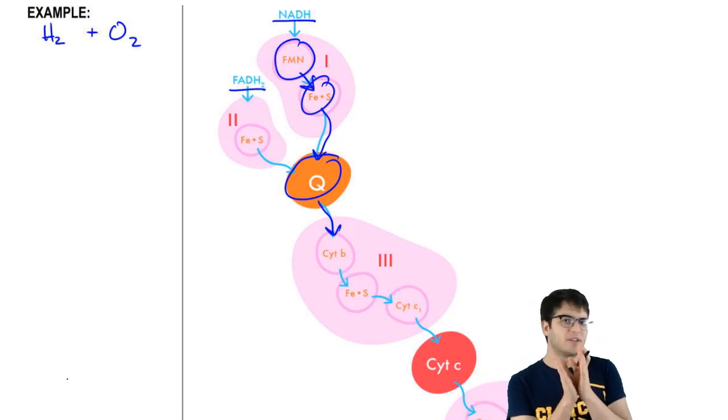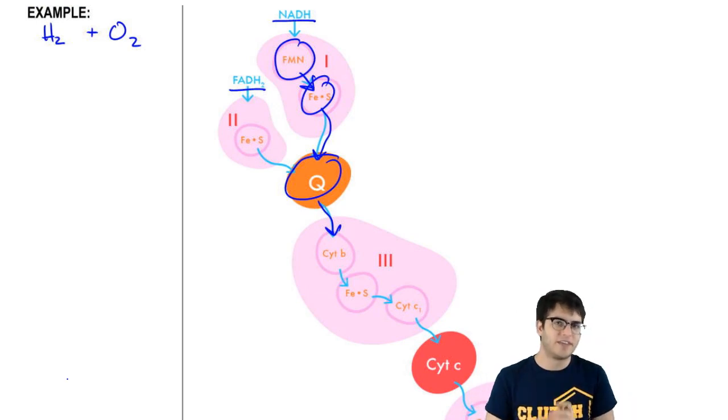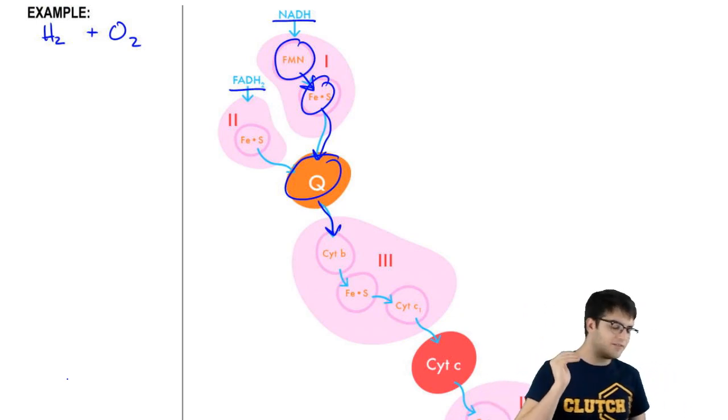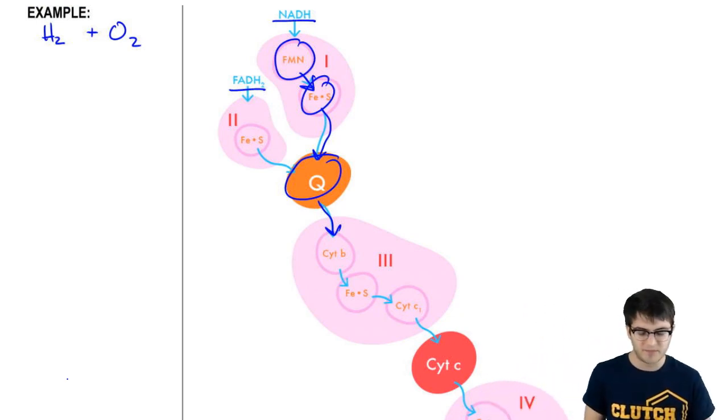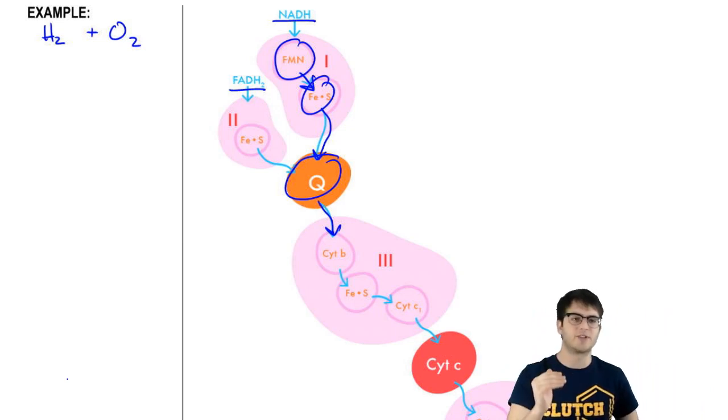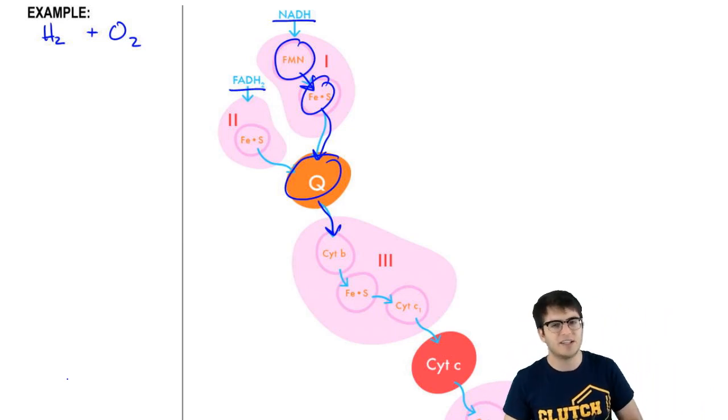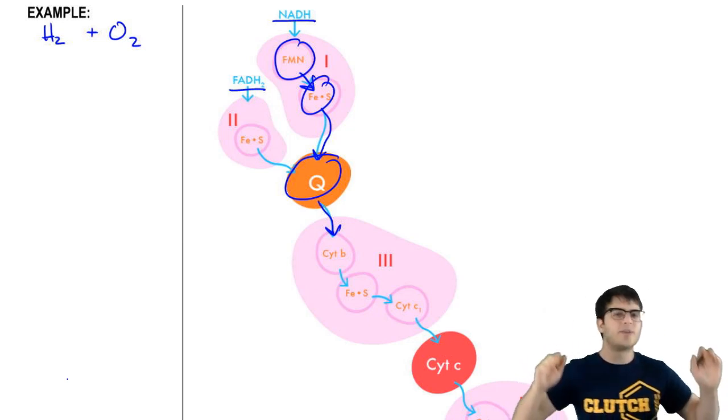So the point of the electron transport chain is to move those electrons through smaller redox reactions that release less energy. So that overall, the cell can capture more usable energy by going through all of those little reactions